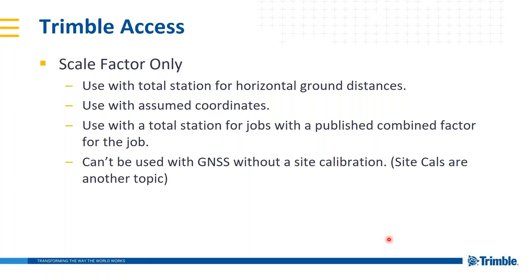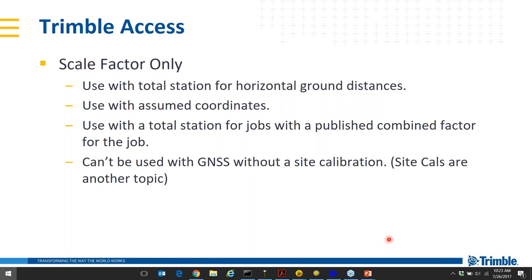Scale factor only jobs generally can't be used with GNSS without a site calibration. A site calibration is when you take a GPS measurement on a known grid coordinate and it creates a relationship between the GPS latitudes and longitudes and the assumed or local site coordinates on the ground. That's a whole other topic — just know that scale factor only is generally going to be used when we're using a total station.